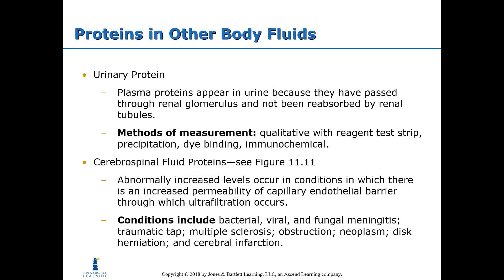Proteins in other body fluids: urinary protein appears in urine when plasma proteins pass through the renal glomerulus and are not reabsorbed by the renal tubules. Protein in urine is not normal and is usually a red flag. In a pregnant woman, protein in urine could indicate blood pressure disorders such as preeclampsia. Methods of measurement include qualitative reagent test strips, precipitation, dye binding, and immunochemicals.